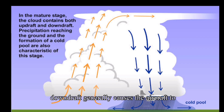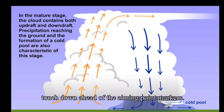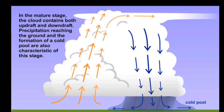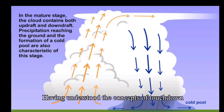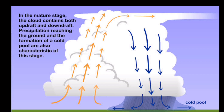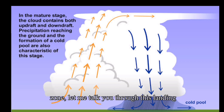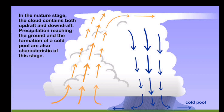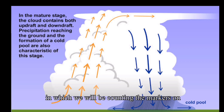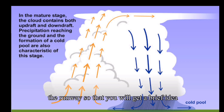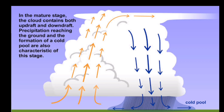Updrafts generally cause the aircraft to touch down beyond the aiming point markers, while downdrafts generally cause the aircraft to touch down ahead of the aiming point markers. Having understood the concepts of the touchdown zone, let's walk through a landing clip in which we count the markers on the runway so you get a clear idea of where the aircraft has touched down.